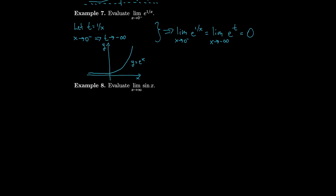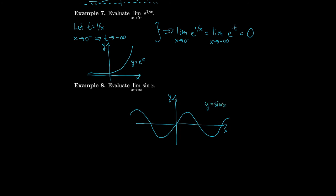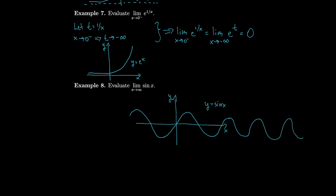Let's look at the limit of sin(x) as x goes to infinity. The graph of sine just keeps going up and down indefinitely. It never levels off — it hits every value between -1 and 1 infinitely often without approaching any specific value. So the limit of sin(x) as x goes to infinity does not exist.